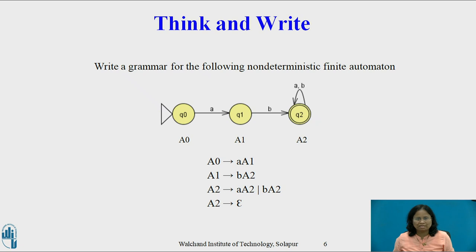State Q1 has a transition to state Q2 on symbols a and b, so introduce the production A1 → bA2. State Q2 has transitions to state Q2 on symbols a and b, so introduce the production A2 → aA2 | bA2. State Q2 is an accepting state, so introduce A2 → epsilon.